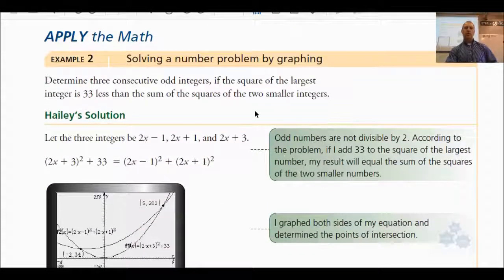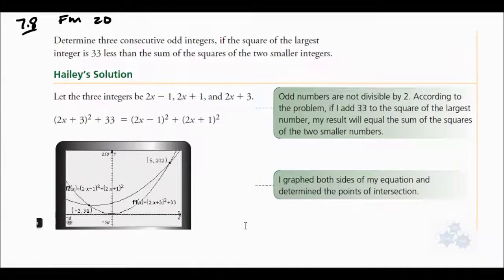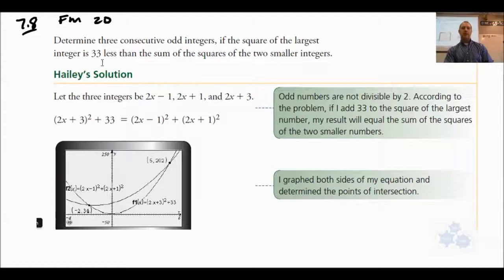So I'm going to skip down to example 2 here. I'm going to pass out the calculators and get you to do this with me so you make sure you know how to graph. In example 2, it says: Determine three consecutive odd integers if the square of the largest integer is 33 less than the sum of the squares of the two smaller. This is very wordy, so you just have to take your time in forming the equation.